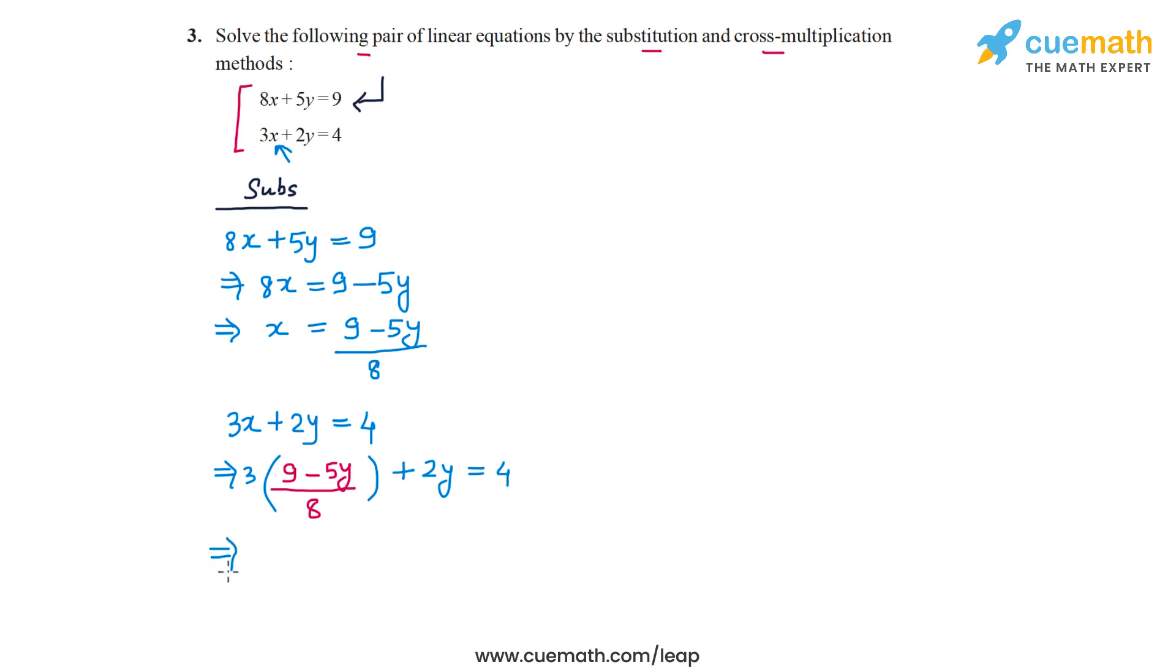Now let's simplify this equation. So we have 3 into 9 minus 5y, so that's 27 minus 15y, and then we have this 8 and 2y. 2y does not have any denominator, so we multiply 2y by 8, so we get 16y, and then we have an 8 below all these three terms. That 8 I can cross multiply on the right side, and that will give me 32 on the right side.